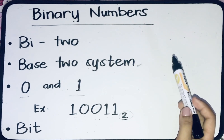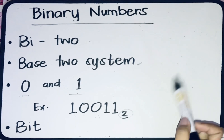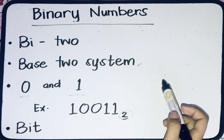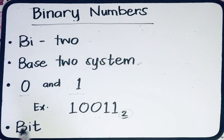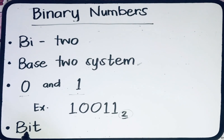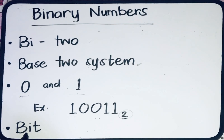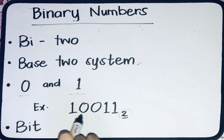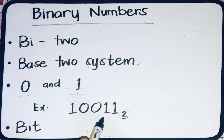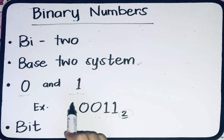Each digit in a binary number is called a bit, from the words 'binary digits.' So in this example, how many bits do we have? There are five bits.